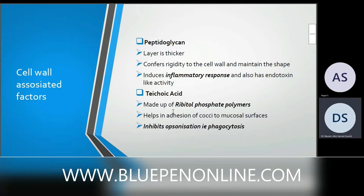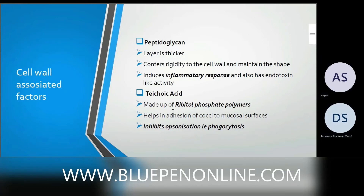Teichoic acid is made up of ribitol phosphate polymers. It helps in adhesion of the coccus to mucosal surfaces such as the intestine, pharynx, nasopharynx, and nose. It also inhibits opsonization — that is, it inhibits phagocytosis — thus helping staph aureus grow within mucosal surfaces.